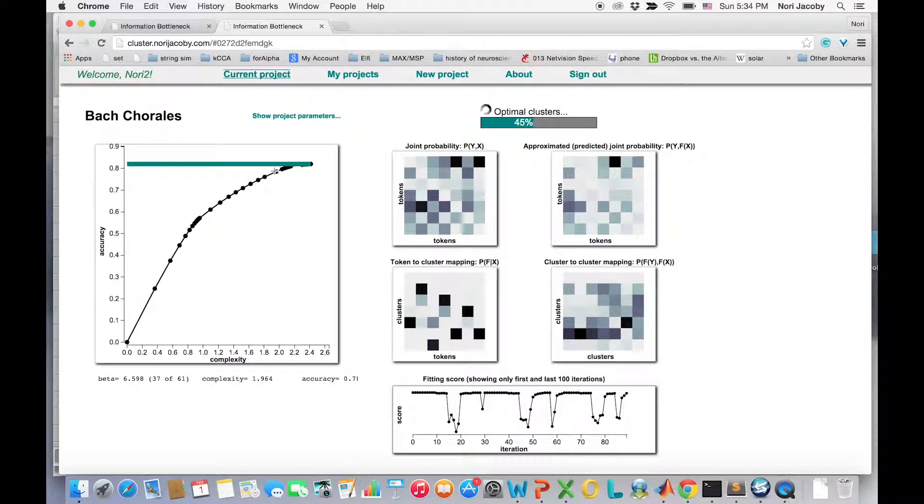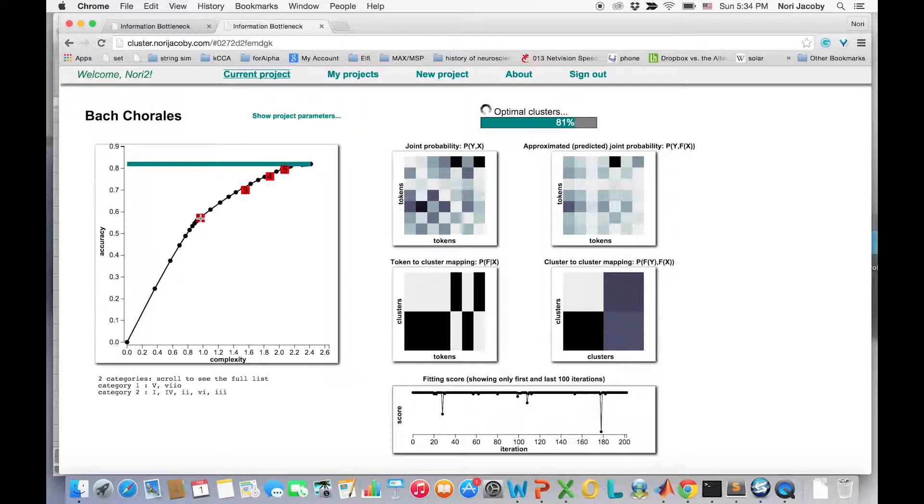Most of these categorization schemes are probabilistic, meaning that the chord can participate in more than one category. However, I can also use the applet to compute the optimal deterministic categories for a specific number of clusters. This is shown in red. These categories are deterministic since each chord now belongs to a single category.